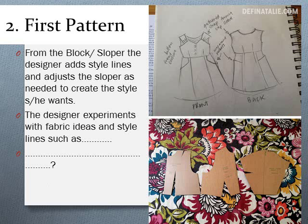From your block sloper, the designer adds style lines to achieve the desired style. Designers experiment with different patterns and colors to get an idea of what the end product might look like. For example, starting with a front bodice sloper, they might add a V-neck, keep a dart, flare the pencil skirt, add seam lines, add pockets. When experimenting with fabric ideas and style lines, they are adding pleats, gathers, tucks, trims, closures — all the details that make a garment unique.